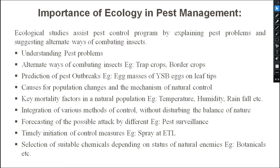We will study step by step how we can use ecology for pest management. By understanding ecology, the first thing we can do is understand the pest problem. Suppose this is the cropping system — this is the crop and this is the pest. We have to identify the pest and identify the symptoms. Second is alternate ways of combating insects — apart from use of insecticide, how we can manage the pest. Sometimes we can use trap crop, border crop, and many kinds of cultural practices.